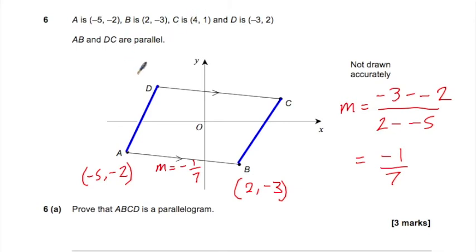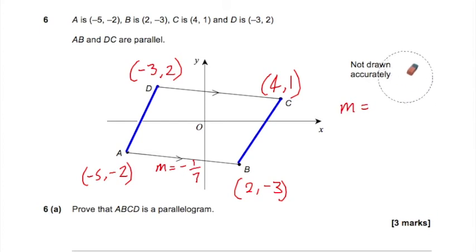And we're going to have to do the same thing for C and D. So D was minus 3, 2. C was 4, 1. So hopefully we get minus a 7. Right, so Y2 minus Y1 again, we'll have 1 minus 2 over 4 minus minus 3, which gives us minus 1 over 7. So as you're going through showing this in the exam, you need to say something like, so AB is parallel to CD.